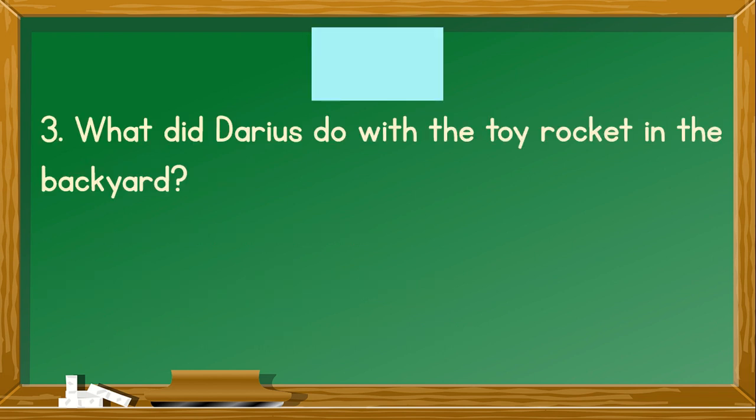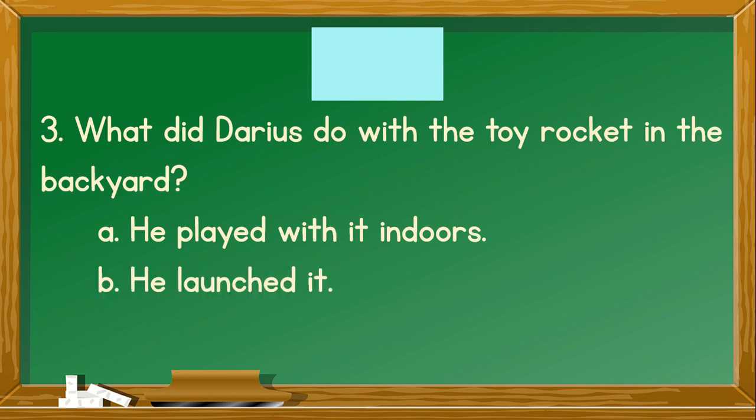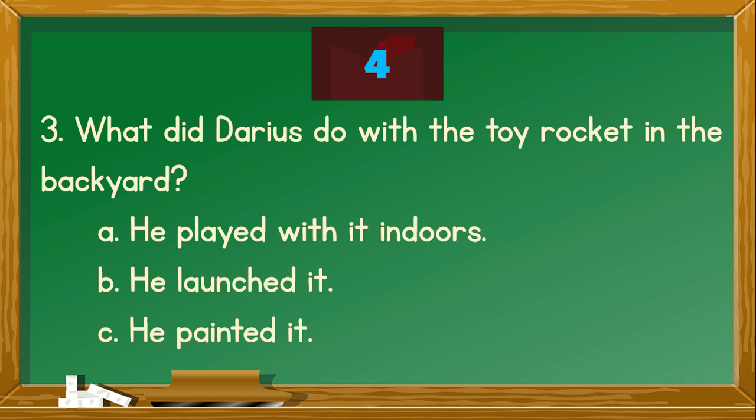Number 3. What did Darius do with the toy rocket in the backyard? A. He played with it indoors. B. He launched it. C. He painted it. You're right. The correct answer is B. He launched it.